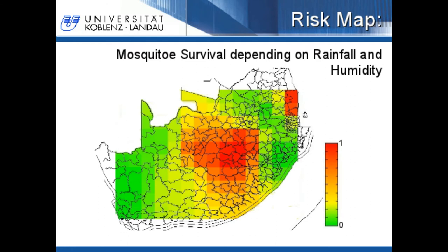On this sheet you can see a risk map about the mosquito survival of Anopheles mosquitoes depending on rainfall and humidity. Red denotes high risk and green denotes low risk. For developing a malaria risk map, more parameters have to be included.